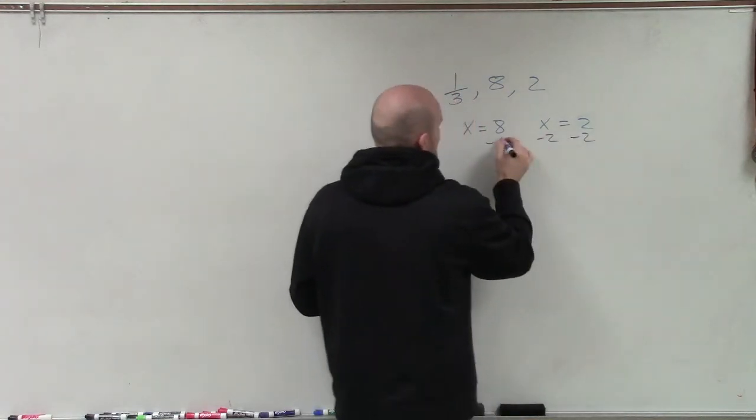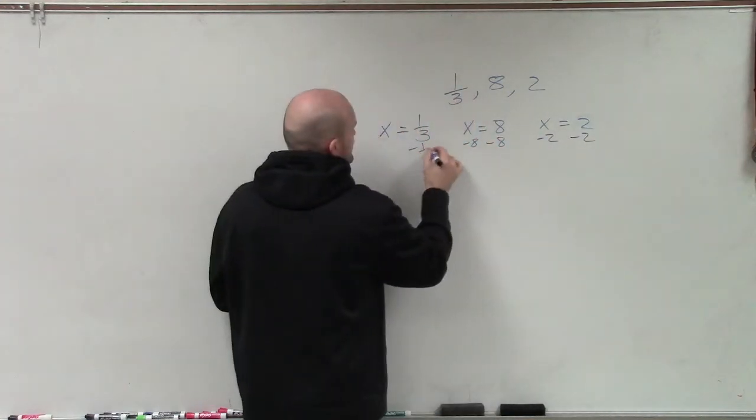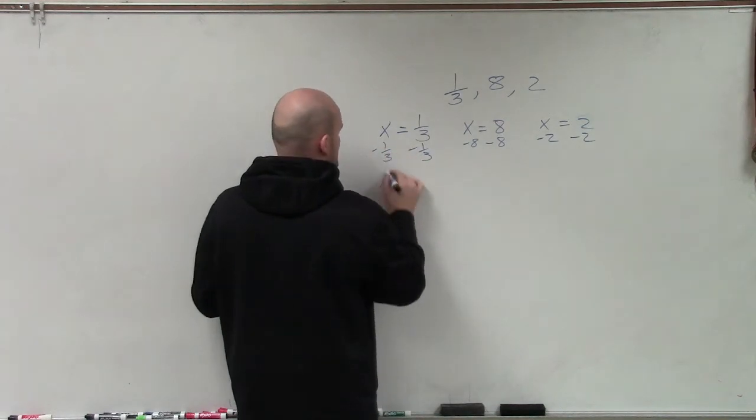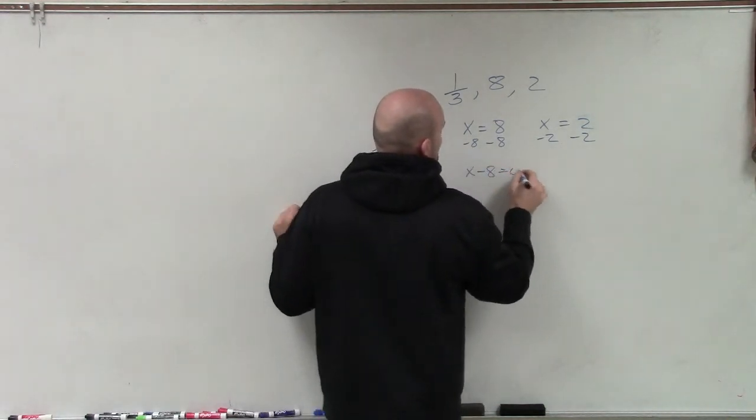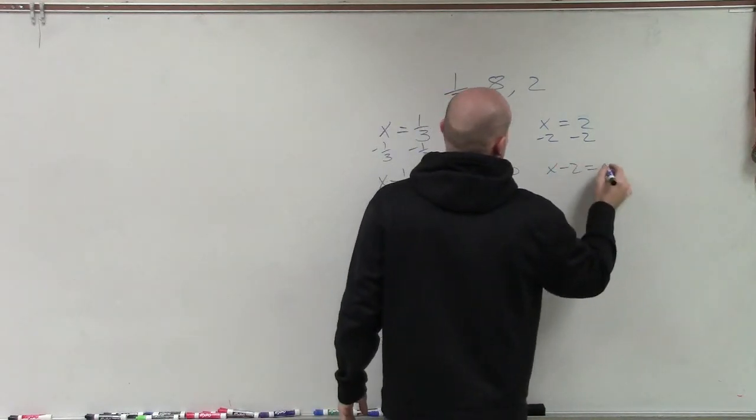So you subtract 2 on both sides, subtract 8 on both sides, and they'd subtract 1/3 on both sides. So therefore, you'd have x minus 1/3 equals 0. You'd have x minus 8 equals 0. And have x minus 2 equals 0.